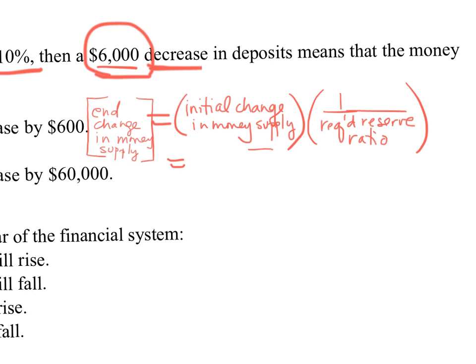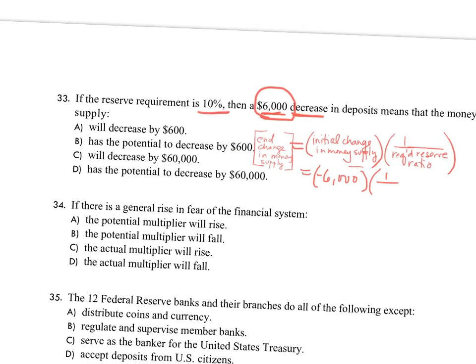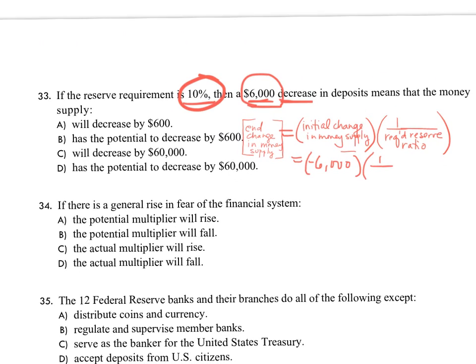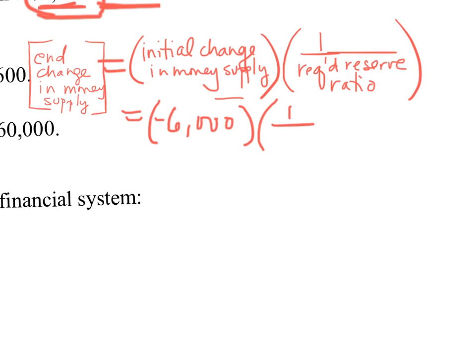The initial change in money supply is $6,000 and it's a decrease, so we put a negative sign. The money multiplier — the amount by which deposits expand or in this case contract through the iterative process of hitting banks, loans, new deposits, and more loans — is 1 over the reserve requirement of 10%, or 1 over 0.1. So negative $6,000 times 10 gives us negative $60,000.